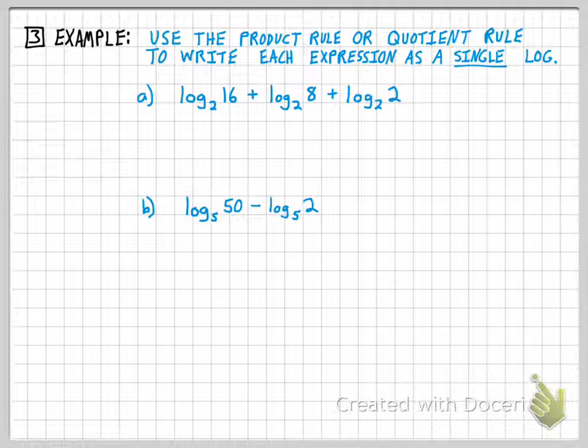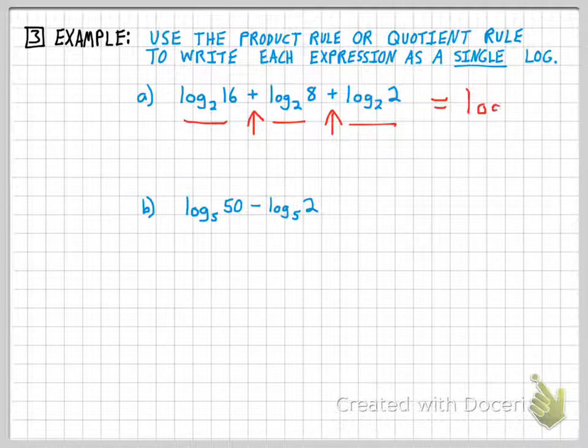So typically we're going to use this rule to write multiple logarithms into a single log. So it's kind of the backwards example of the last two. Notice here I have three logarithms. They're all of matching bases, and they're all being added together. And what that product rule allows me to do is to write this long expression with three logarithms as just a single logarithm. And since I'm adding the individual logs, my single quantity here would be the product of all those numbers. So 16 times 8 times 2, which I think is 256.